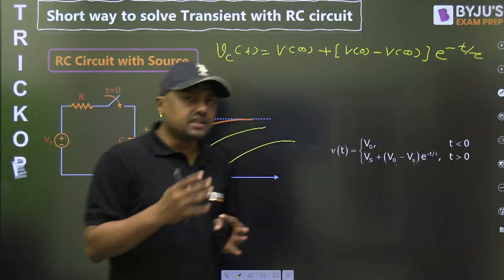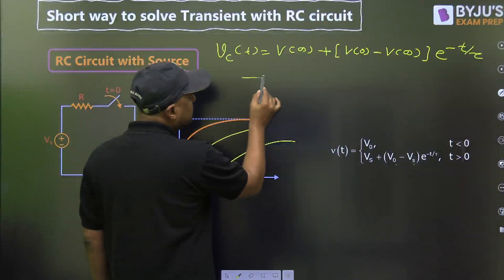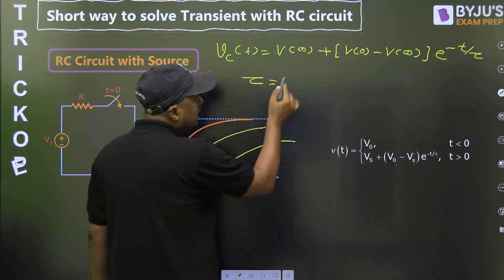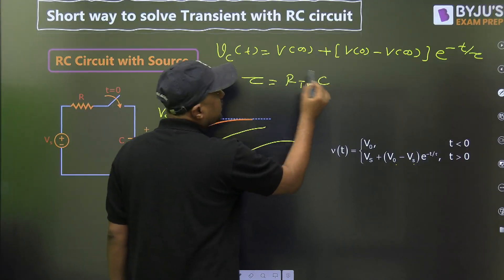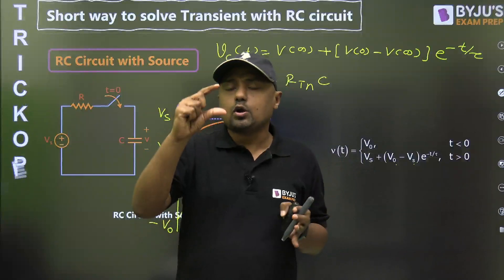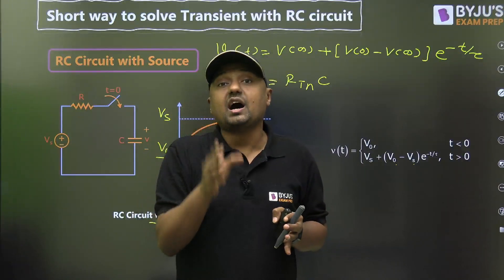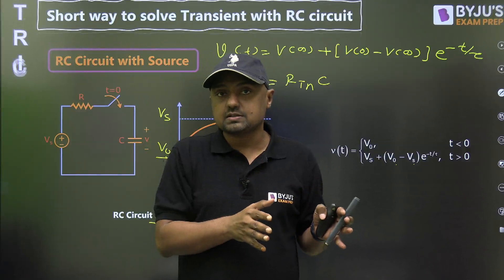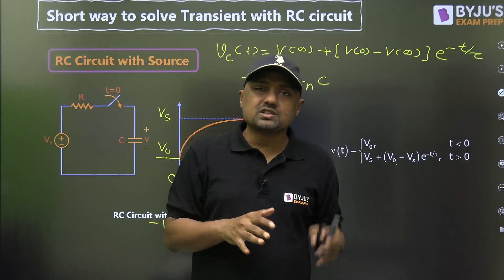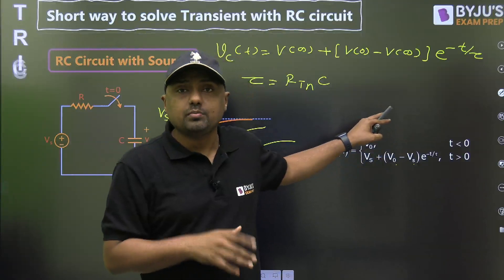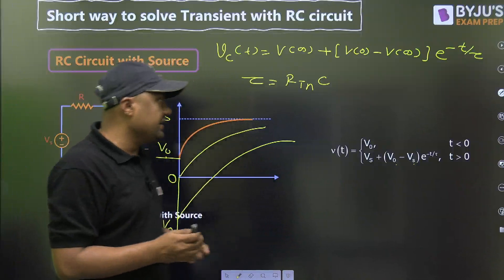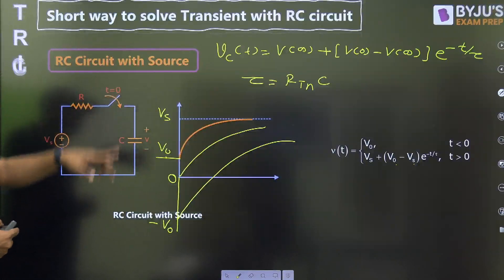To find the time constant in any circuit, always find it after switching — that is, for t greater than zero. The time constant is τ = R_th × C. If multiple components are connected across the capacitor, find the Thevenin resistance R_th — whether independent or dependent sources are present — using Thevenin's theorem, then multiply by C.